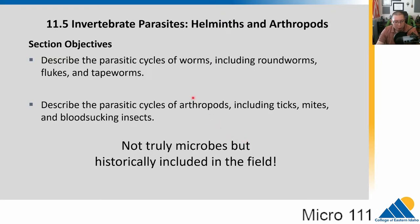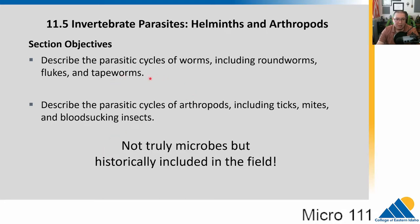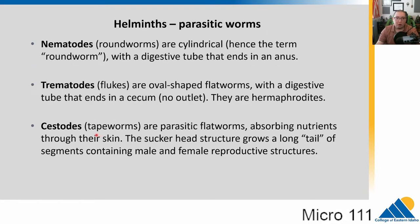This chapter, if you are squeamish, may give you the heebie-jeebies, because this is all about invertebrate parasites, including helminths, which are parasitic worms, and arthropods, which include insects and arachnids. Disclaimer: these are truly not microbes — they are not microscopic. For historical reasons, they are included in microbiology. Worms have microscopic egg stages that microbiology is used for, and arthropods are common vectors for many microbial pathogens, so they can transmit them from individual to individual.